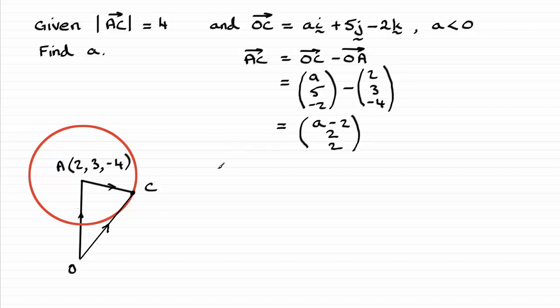Now, we start to use this result here, the modulus one. So I'm just going to write in here again that we've got, since the modulus of A to C equals 4 units. Well, using Pythagoras' theorem, it would be the square root of all of A minus 2 squared plus 2 squared plus 2 squared equals 4.